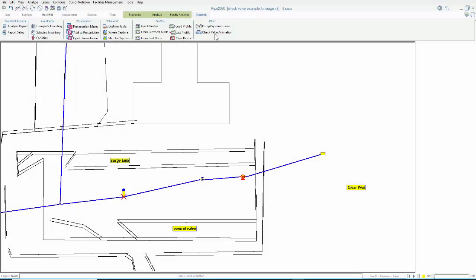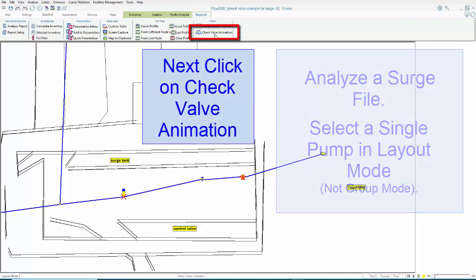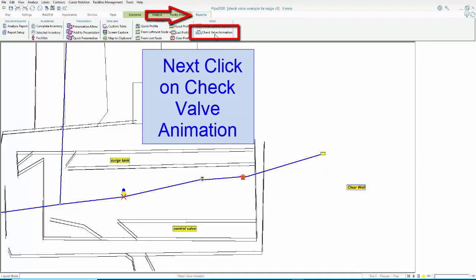After analyzing a surge file, select a pump with a check valve. Click on the Check Valve Animation Feature button within the Reports tab.